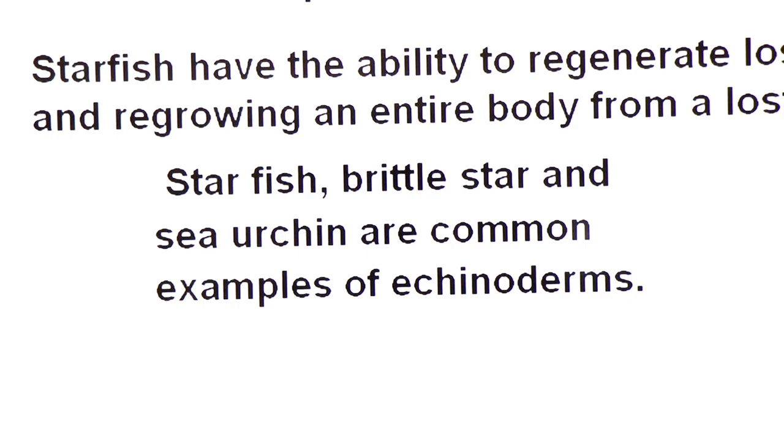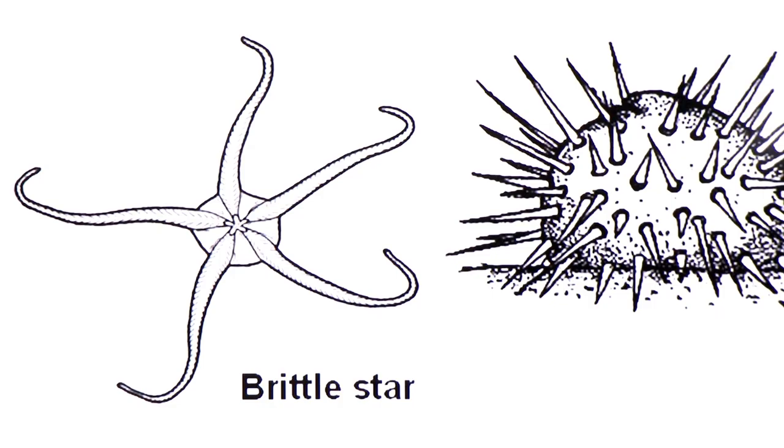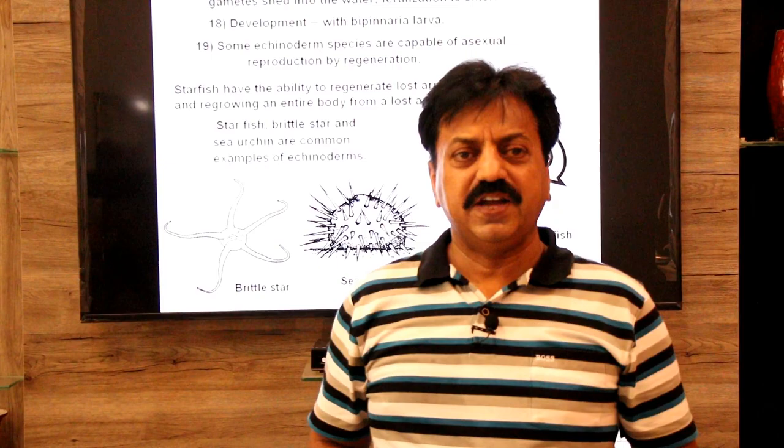Now examples. Starfish, brittle star and sea urchin are common examples of echinoderms. This is the diagram showing brittle star and this is the diagram showing sea urchin.